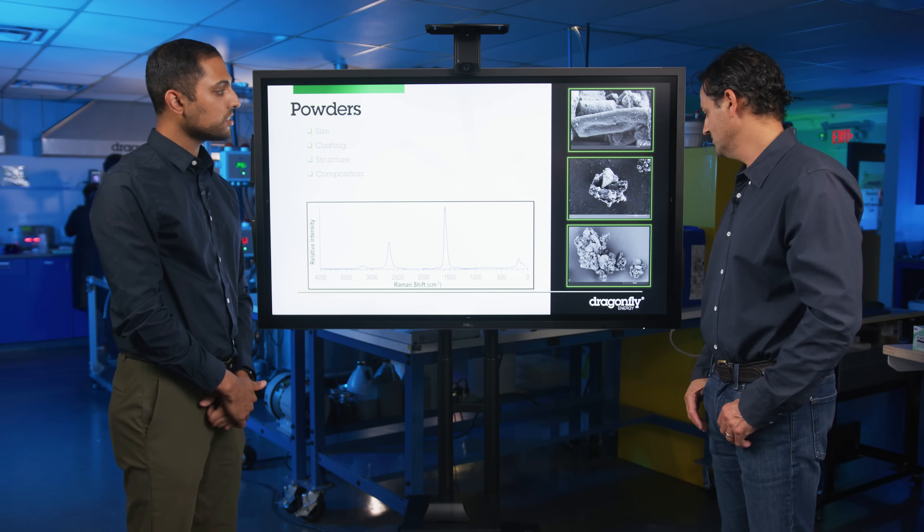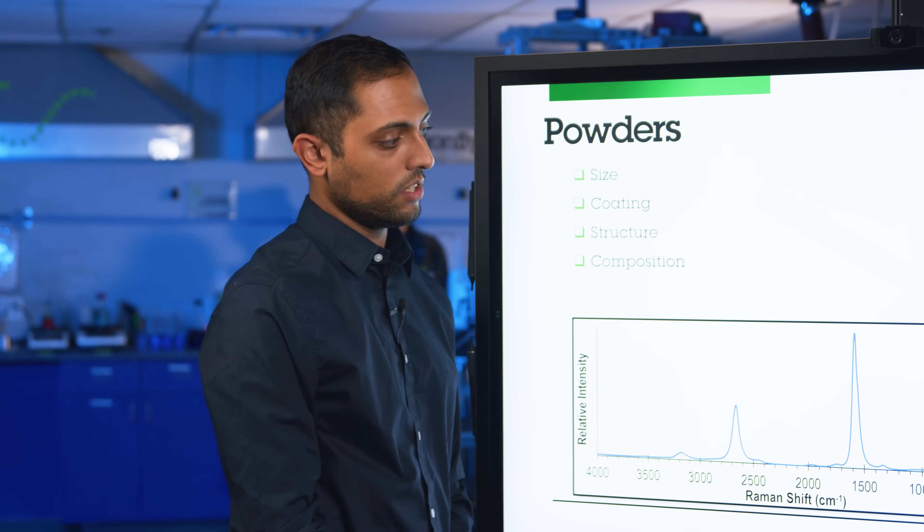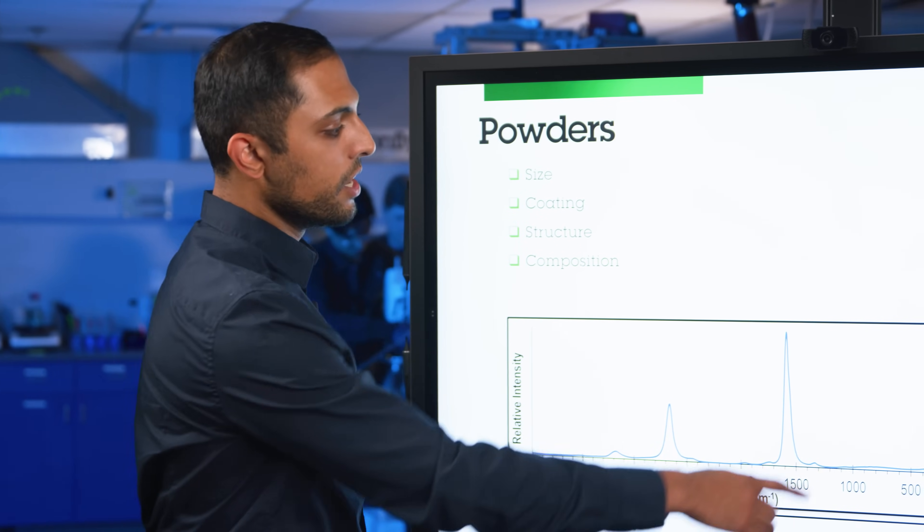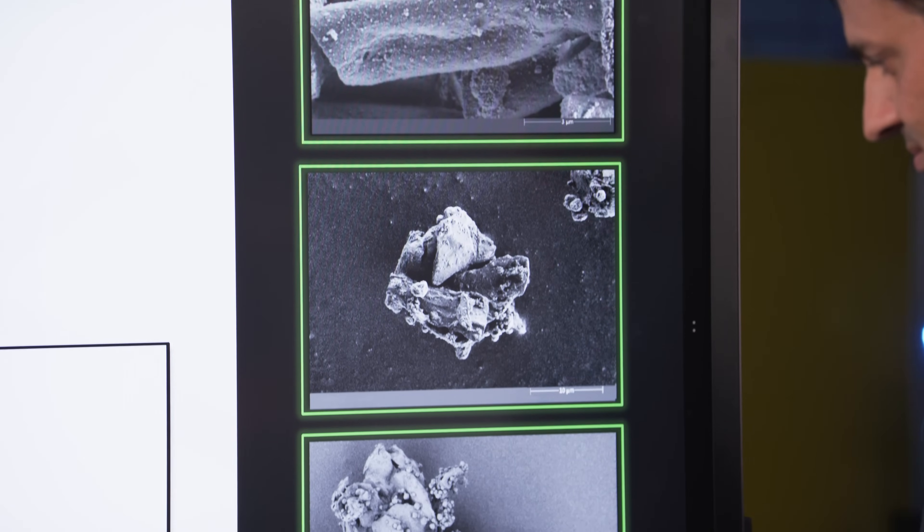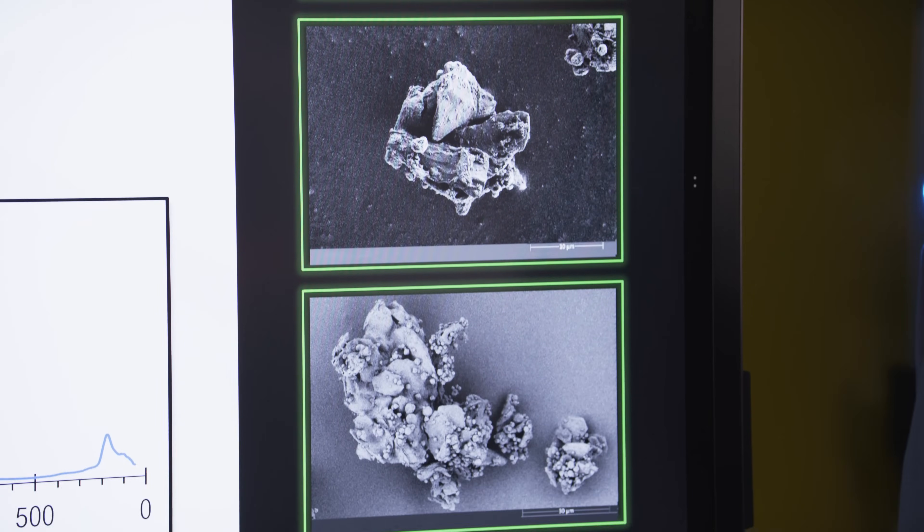So what we're seeing are some graphite and different anode particulates that have been coated using that spray drying process on the right, and images of those individual particles. So you can see carbon and binder and a lot of the other constituents mixed in to create a nice anode mix.